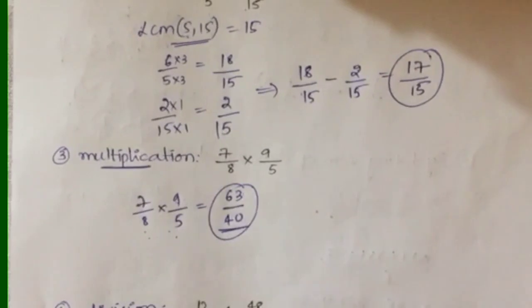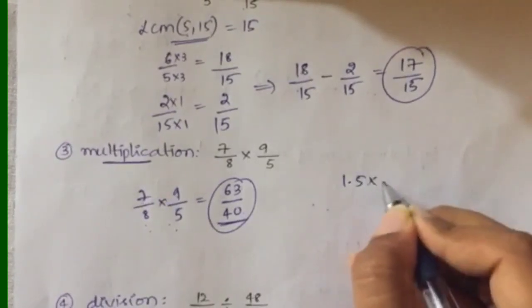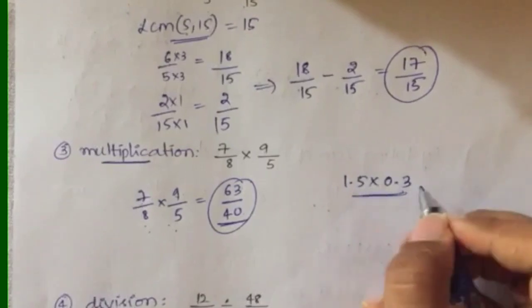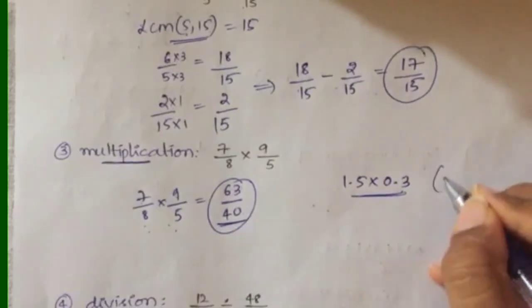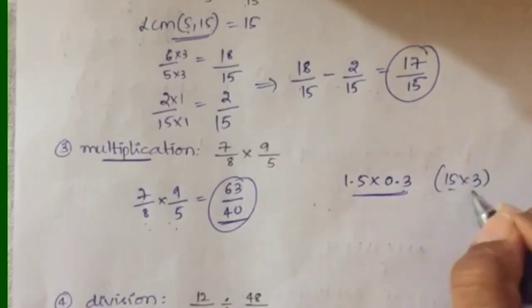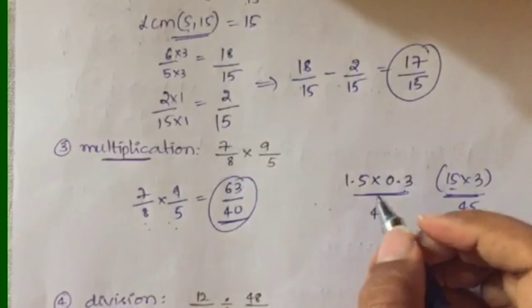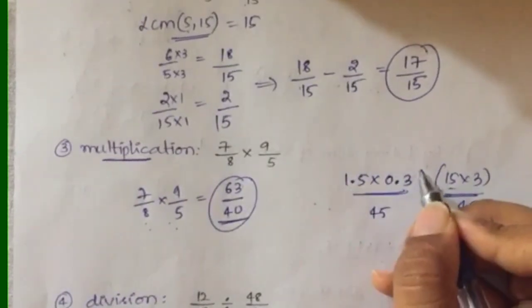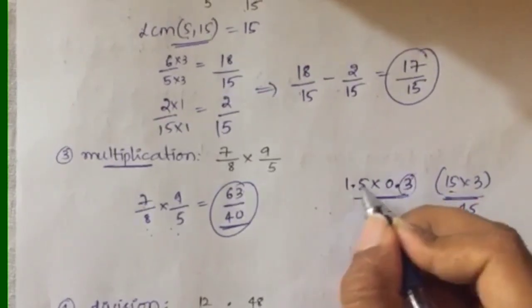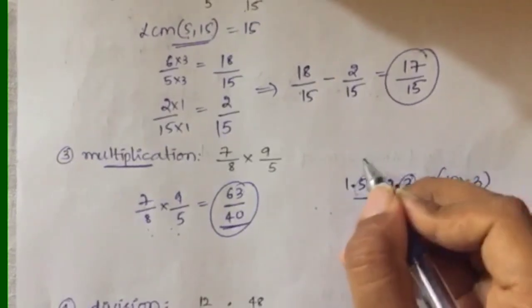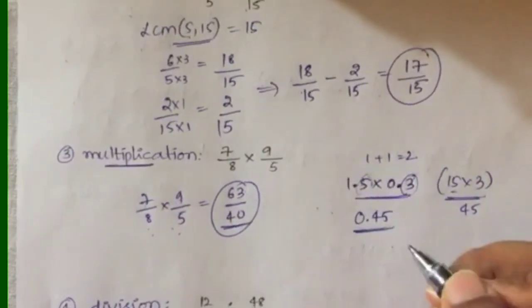You may also get decimals — for example, 1.5 × 0.3. First, ignore the decimal points: 15 × 3 = 45. Now count the decimal places: 1.5 has one digit after the decimal and 0.3 also has one digit after the decimal — total 1 + 1 = 2 decimal places. So place the decimal point 2 places from the right in 45, giving 0.45. Very simple!